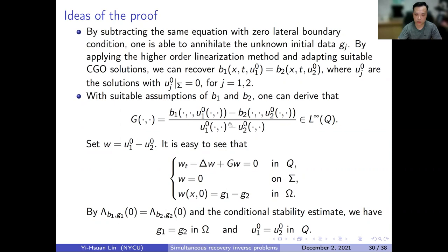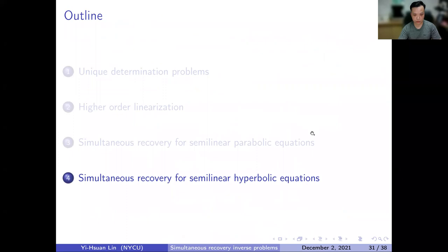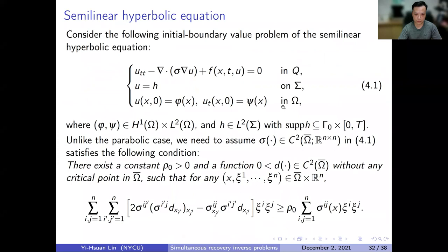There are many details but the main logical flow is clear. The last part concerns the semilinear hyperbolic equation, which is quite similar to the parabolic case. We consider: U_tt minus divergence(sigma grad U) plus nonlinear term equals zero, with boundary data h and two initial data — displacement and velocity.